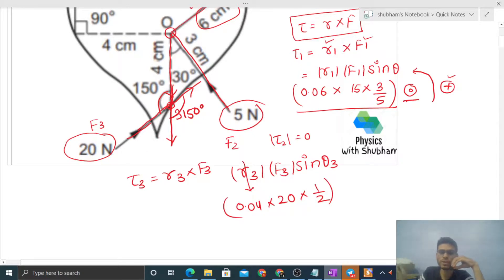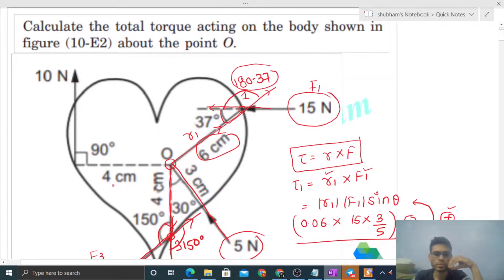R cross F is out of the page, so dot or anticlockwise or positive. Now torque 4 will be equal to R4 times F4 times sine theta 4.